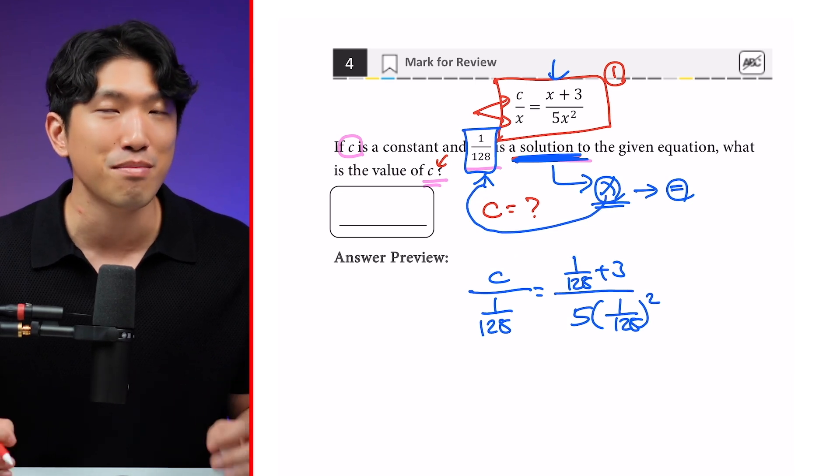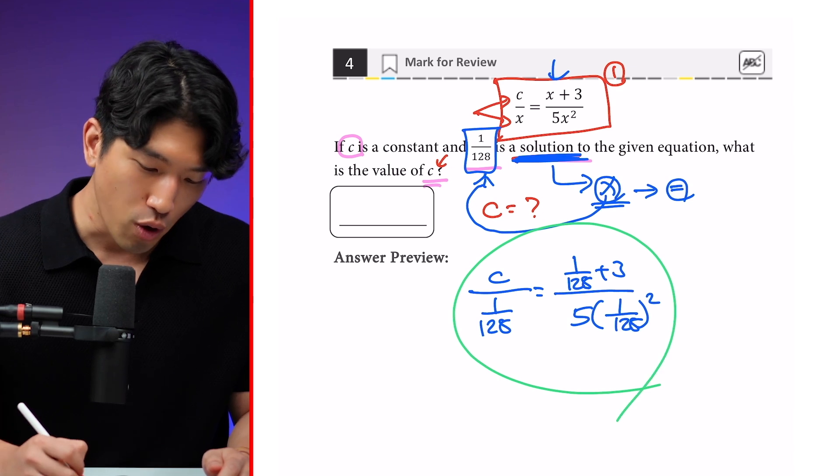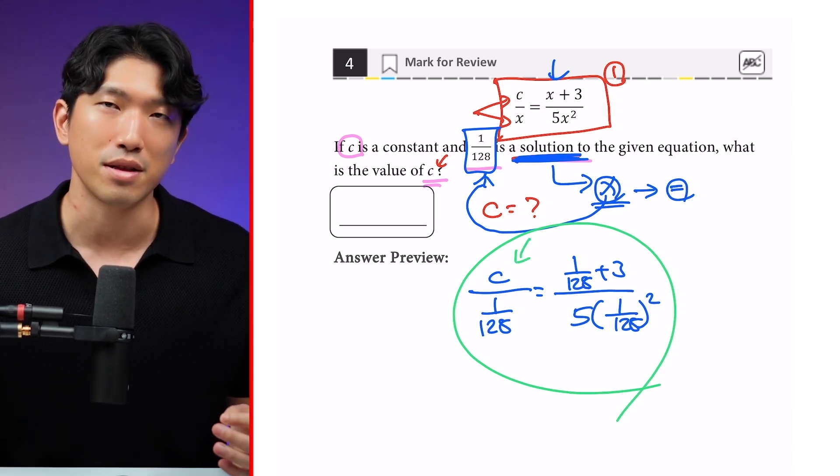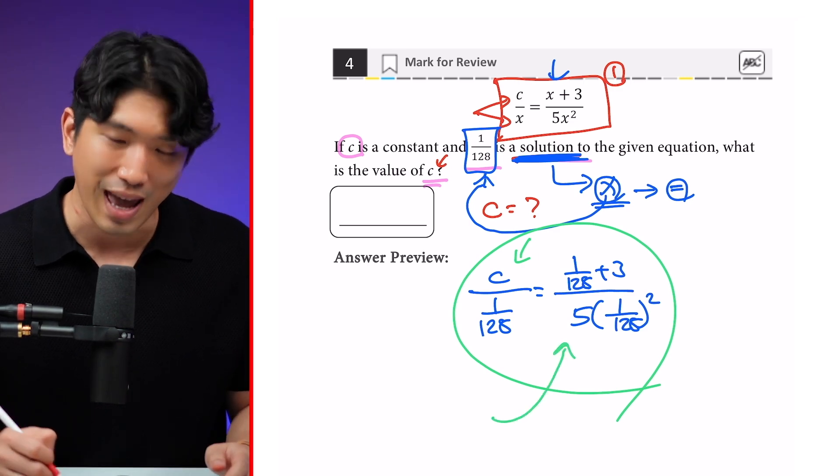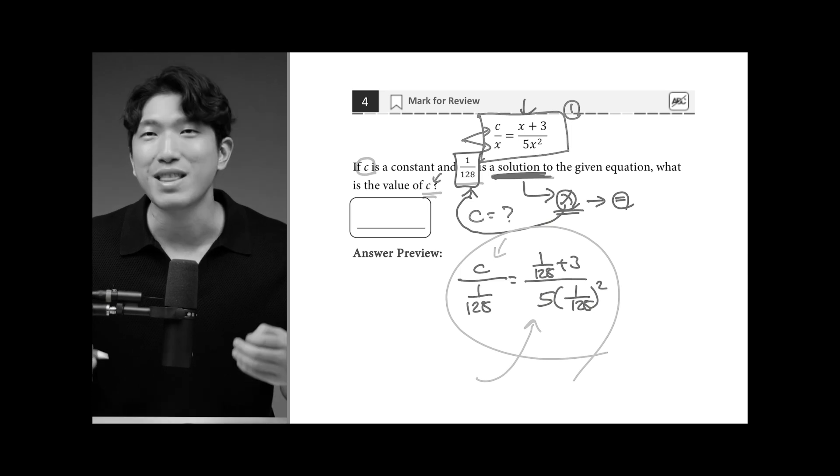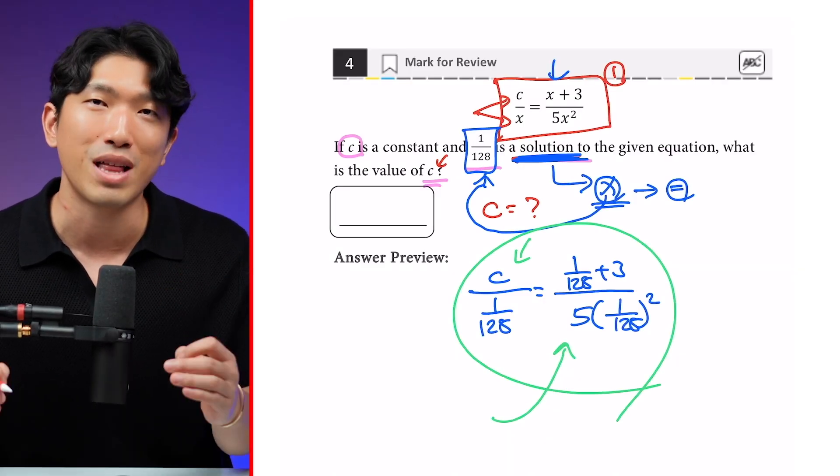And by now, you're probably sick of hearing it. But say it with me. What do we see here? We see one equation with one unknown variable. And it looks very, very, very complicated. Just the thought of having to do this by hand or calculator just makes me want to drop out. So for the sake of your future and not getting disowned by your family, let's pop this into Desmos and find out what our c is.